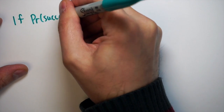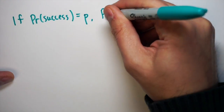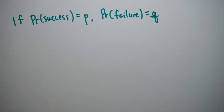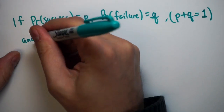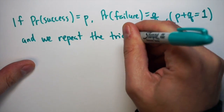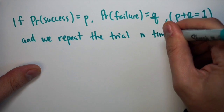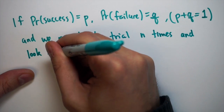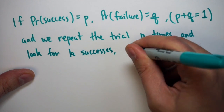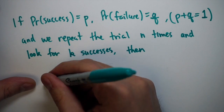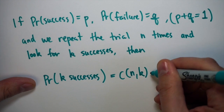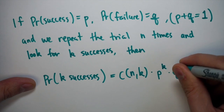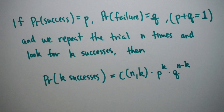To come up with a general formula, assume the probability of success is P and the probability of failure is Q, so P plus Q equals one. We repeat the experiment n times and look for K successes. Following the previous examples, the probability of getting K successes is C(n,K) times P to the K power times Q to the (n minus K) power. Note that (n minus K) plus K equals n, ensuring all trials are accounted for.